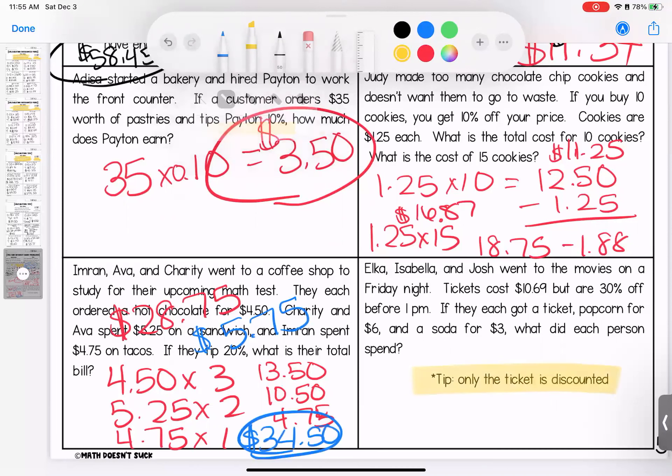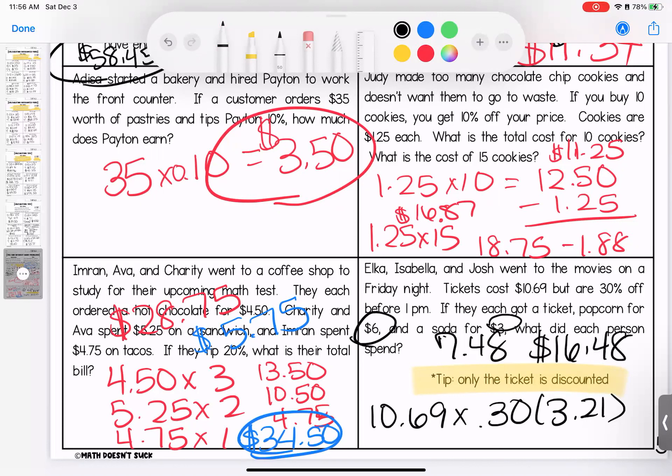Last one, a little tricky. I did include a tip for you. It says that Elka, Isabella, and Josh went to the movies on a Friday night. Tickets cost $10.69, but are 30% off before 1 PM. If they each got a ticket, popcorn for $6 and a soda for $3, what did each person spend? You only need to figure out the cost for one person. So one ticket was $10.69 with a 30% discount. Only the ticket is discounted. So they get $3.21 off of their ticket. We're doing the cost of a ticket, which is $7.48 plus the popcorn plus the soda. Adding that $9, each person paid $16.48. Love to know what you thought about adding the word problems this week to our homework. Give me your thoughts. Otherwise I will see you guys next week. Have a great week.